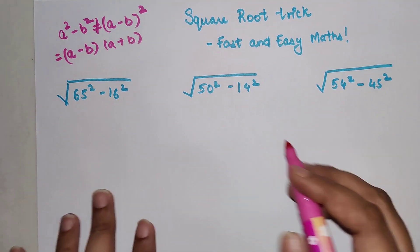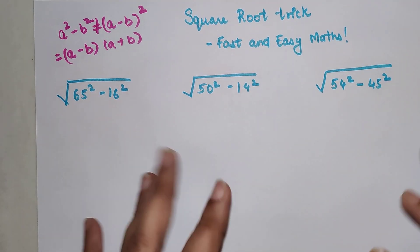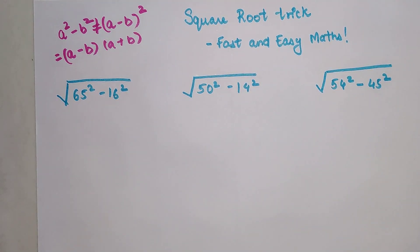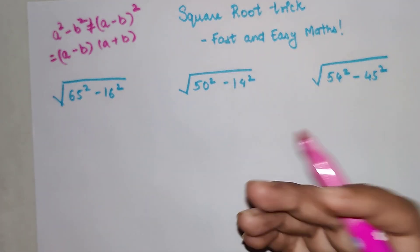You can directly find the squares and do the subtraction, yes that works, but sometimes it becomes very difficult or tedious. Instead of that, when it can be simplified, why don't we simplify it?